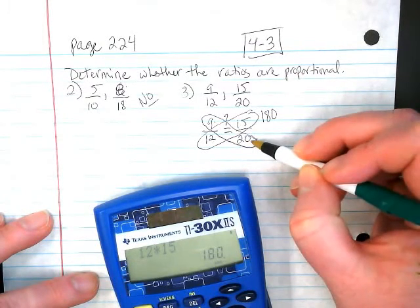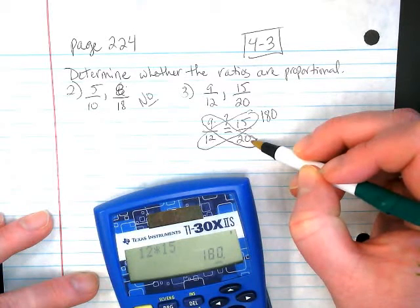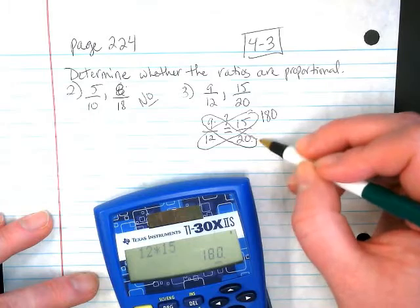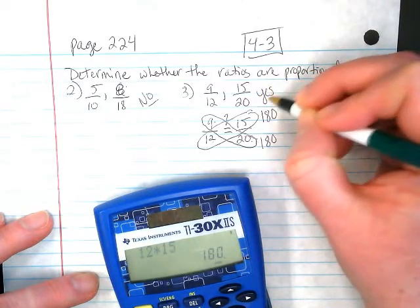What about nine times twenty? It's also one hundred and eighty, isn't it? That means that this is proportional.